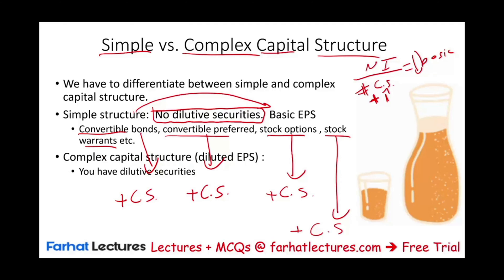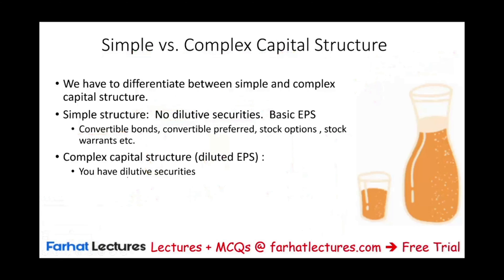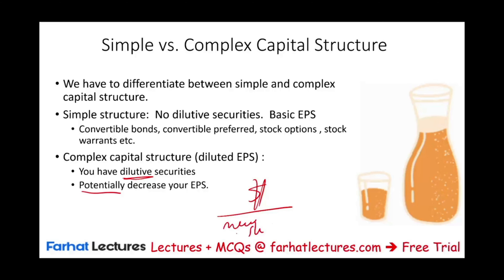Therefore, if you have a complex capital structure, you are required to compute dilutive earnings per share, because your earnings per share is potentially — meaning possibly — lower. That's why you have to do the computation: take net income over the new shares, because when the denominator changes, the numerator will change as well. Then you have to see what the effect is. If the effect is down, it's dilutive.